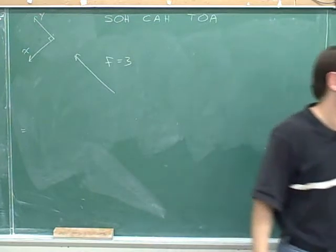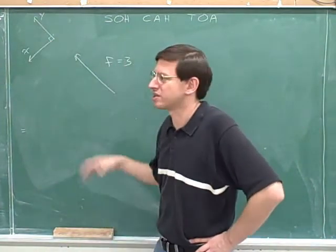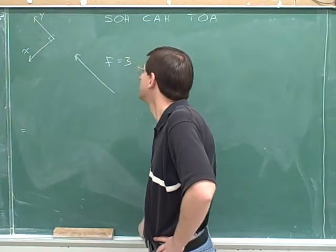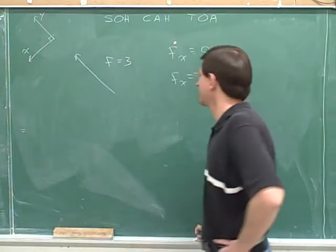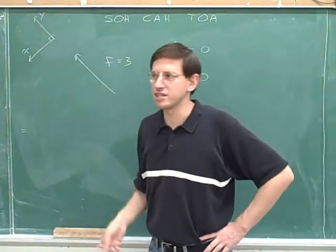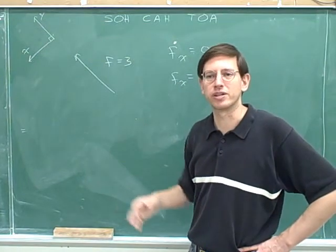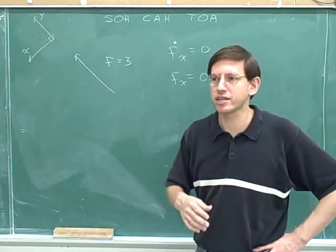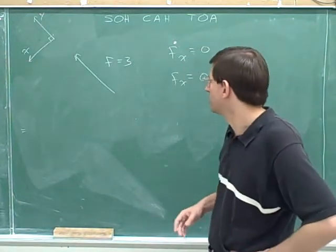Let's break this vector into components. We should assume that this is parallel to the y-axis, because otherwise there's no way to solve the problem. So if these look parallel, we'll assume that this vector is parallel to the y-axis. That means it doesn't have an x-component. When a vector is parallel or anti-parallel to one of the axes, it only has one component — it only has a component in the axis that it's parallel to. So this only has a y-component.